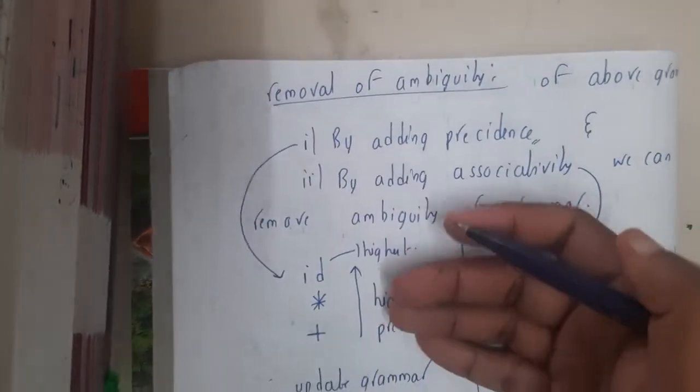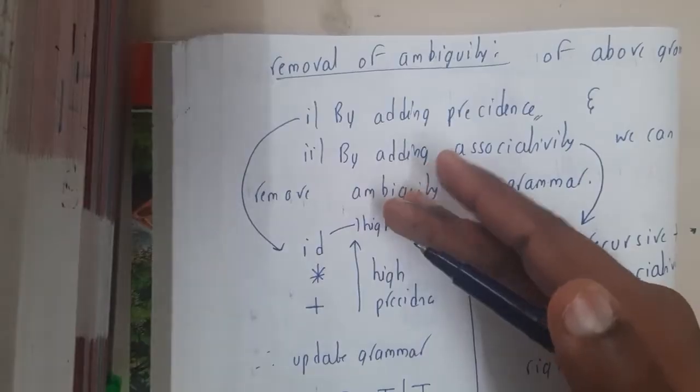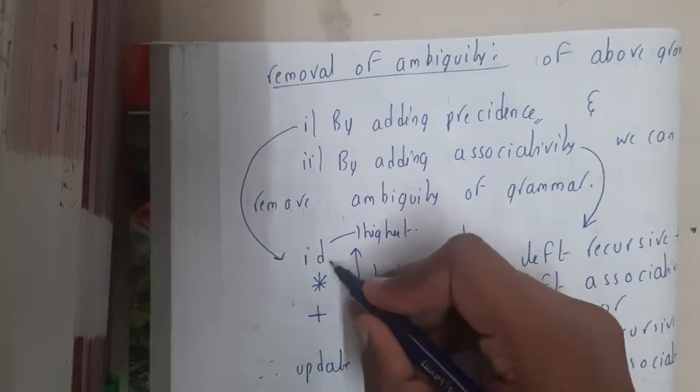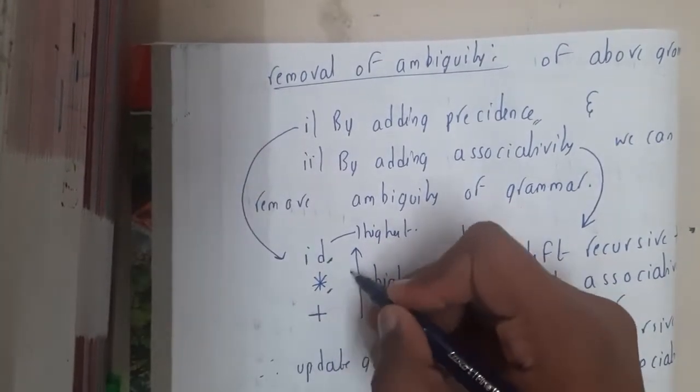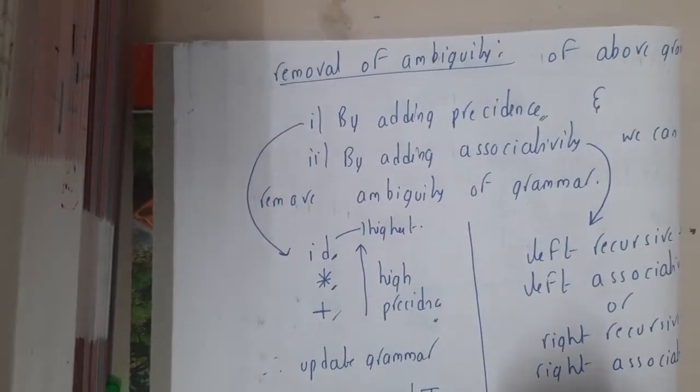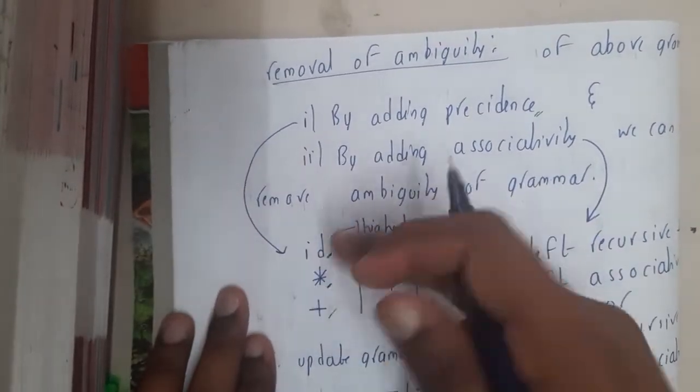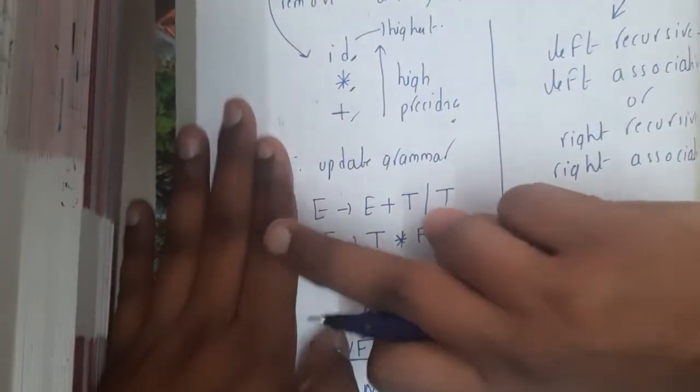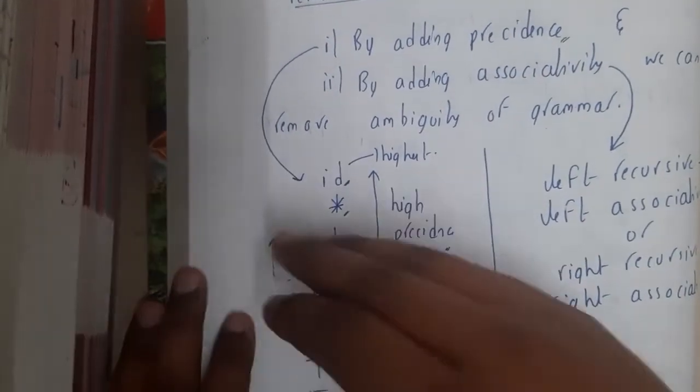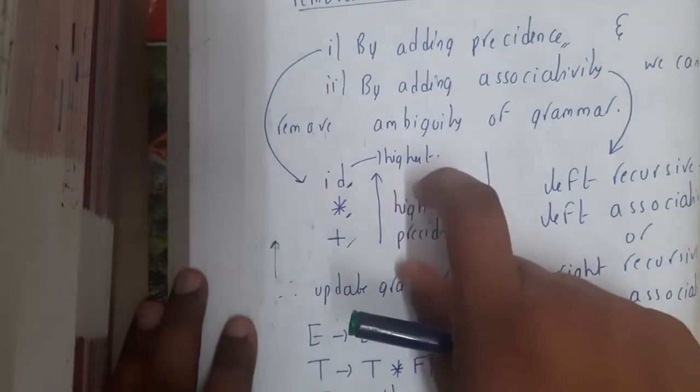Removal of ambiguity of the above grammar by adding precedence. If you add precedence, precedence is nothing but which has the highest priority. Here in our precedence for this grammar, for id I am giving the highest precedence, for multiplication the second highest, and for positive the least precedence. Note that in the precedence order, that is high to low, you will be writing the rules in the reverse order. Because we will be following bottom-up approach, at the bottom you need to have id, after that multiplication, after that addition.